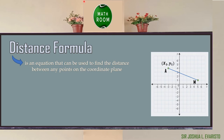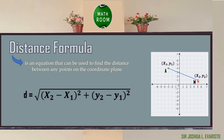Given the coordinates of point 1 as x sub 1 and y sub 1, and point 2 as x sub 2 and y sub 2, the distance formula is defined as: d is equal to the square root of the quantity x sub 2 minus x sub 1, squared, plus the quantity y sub 2 minus y sub 1, squared.